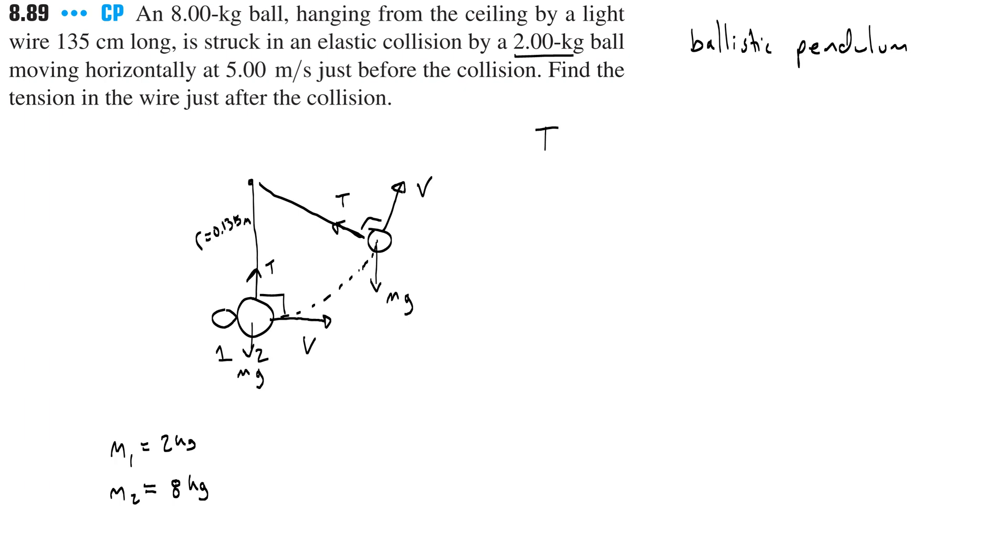Now, at different parts in the swing, the component of the weight that is centripetal is going to change depending on what this angle is as it moves. But thankfully, this problem asks for the tension only just after the collision, which means that we can use the fact that the weight force goes down and the tension goes up to write an equation for our net centripetal force, where T minus the weight is our centripetal force. So we can set it equal to mv squared over r.